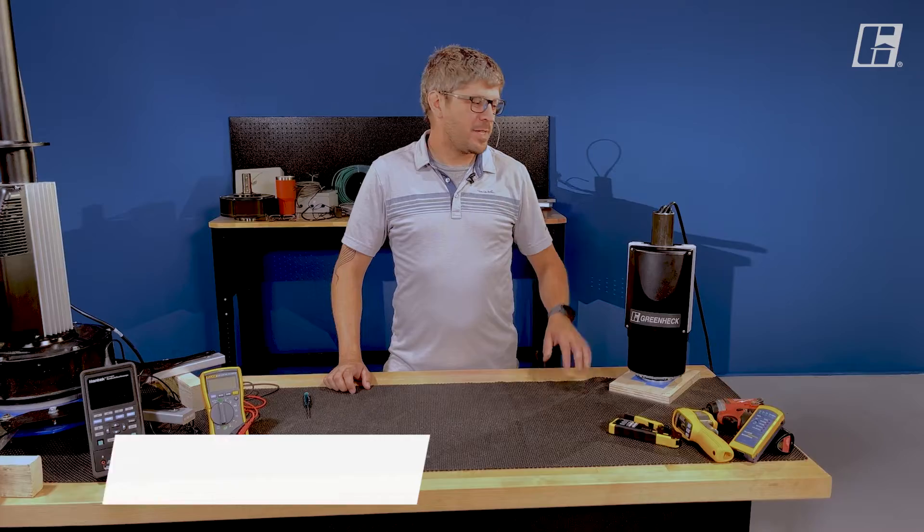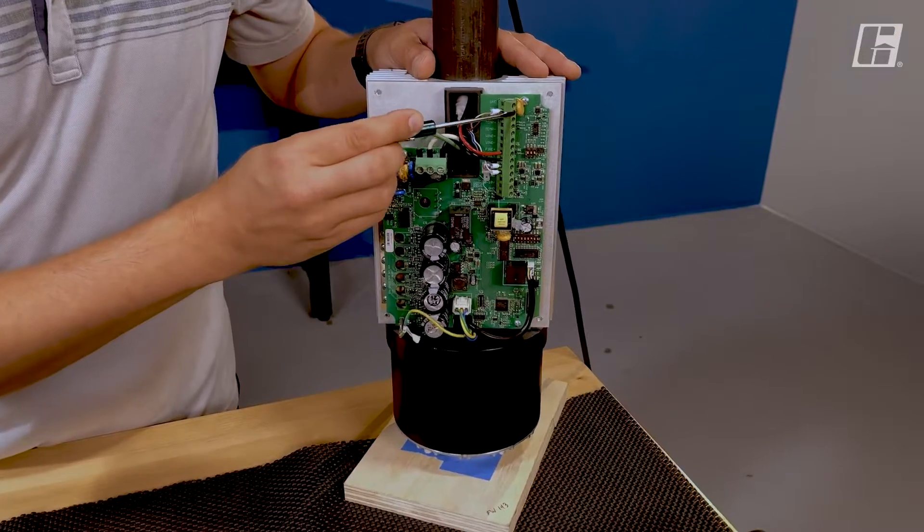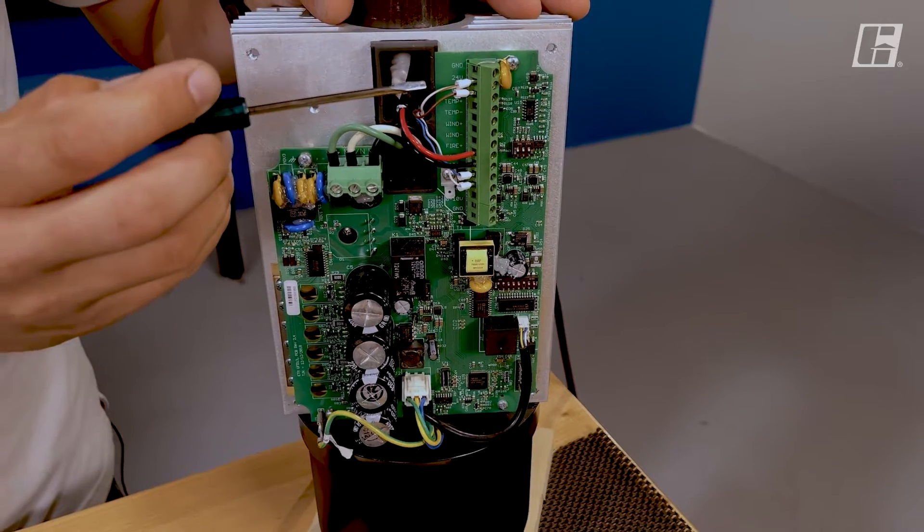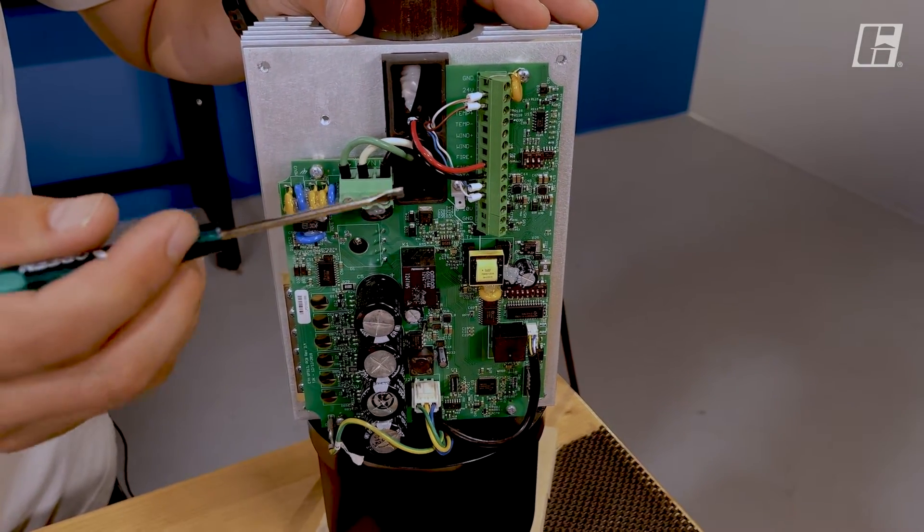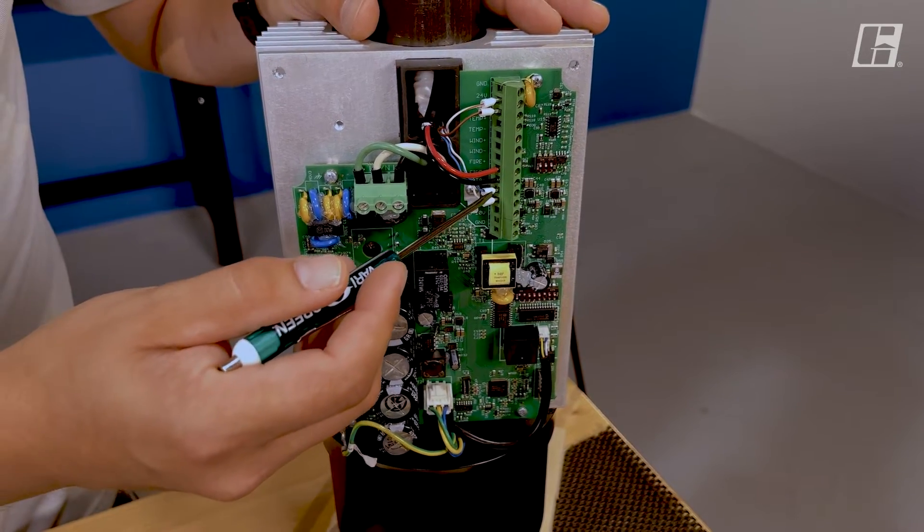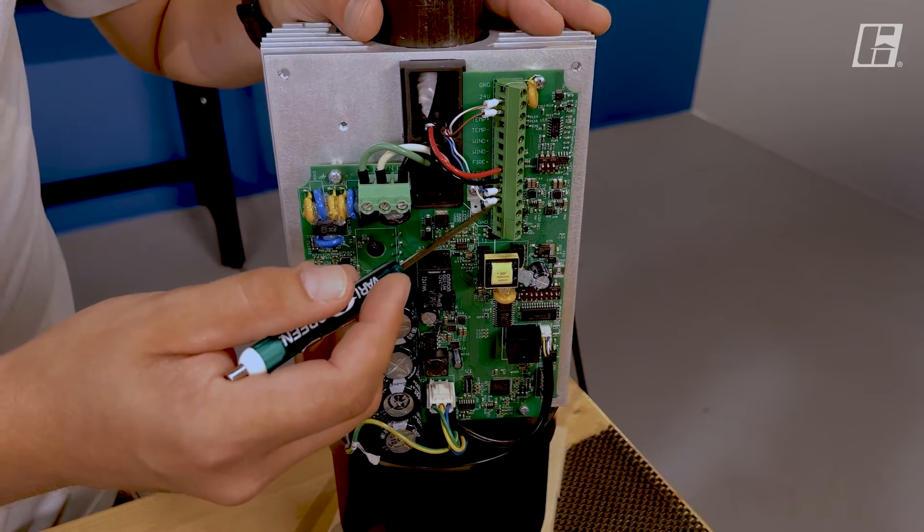Today I'm going to be looking at our DC drive. On our low voltage side of the drive we have a 24 volt output, a ground output, fire plus, fire minus, data plus, and data minus.